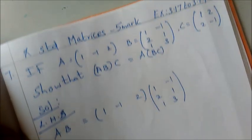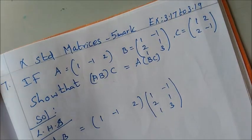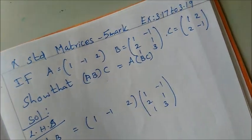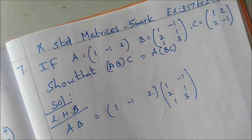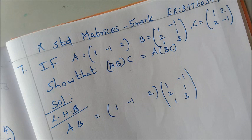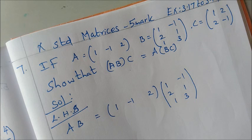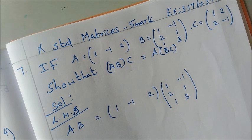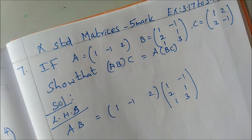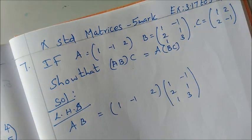This is 10th standard Matrices, 5 marks, Exercise 3.17 to 19, sum 7. A is a 1×3 matrix: [1, -1, 2]. B is a 3×2 matrix: [1, -1; 2, 1; 1, 3]. C is a 2×2 matrix: [1, 2; 2, -1]. Show that (AB)C = A(BC).